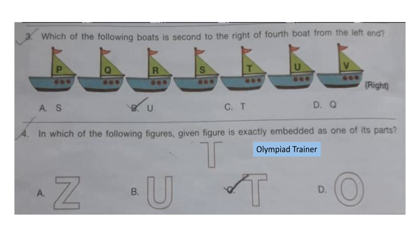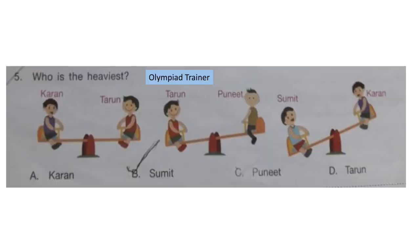Question 4: In which of the following figures is the given figure exactly embedded as one of its parts? The correct answer is option C. Question 5: Who is the heaviest? Three pictures are given. The second figure shows Tarun is heavier than Punit. The first figure shows Karan and Tarun are equally weighing. The third figure shows Sumit is heavier than Karan. So the heaviest is Sumit — option B.